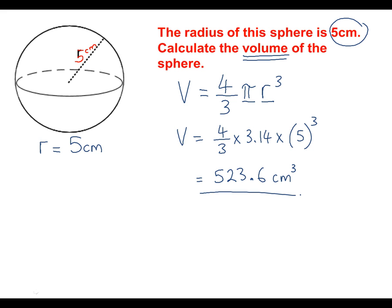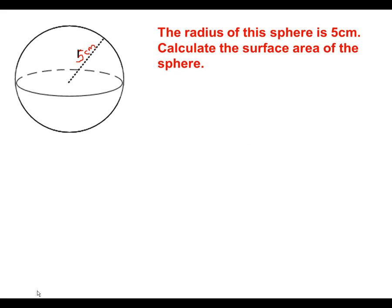As you can see, all we had to do was look at the formula for the volume of a sphere and put the numbers in. Now let's have a go at finding the surface area of a sphere. It's the same question — radius 5 centimetres — but we're looking for the surface area this time. We look at the front of the formula sheet again, and it tells us the surface area of a sphere is 4πr².